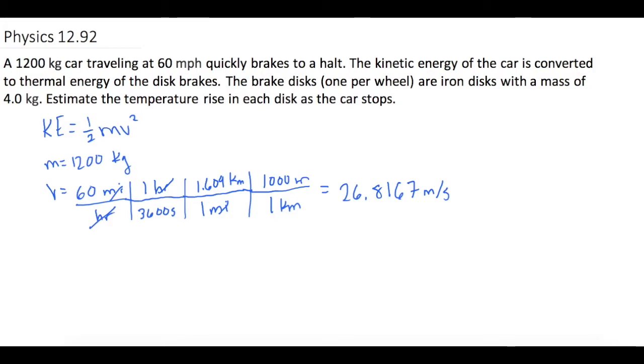All right, so now let's plug that into kinetic energy. So KE is equal to 1/2 the mass of 1200 kilograms times v squared of 26.8167 meters per second squared.